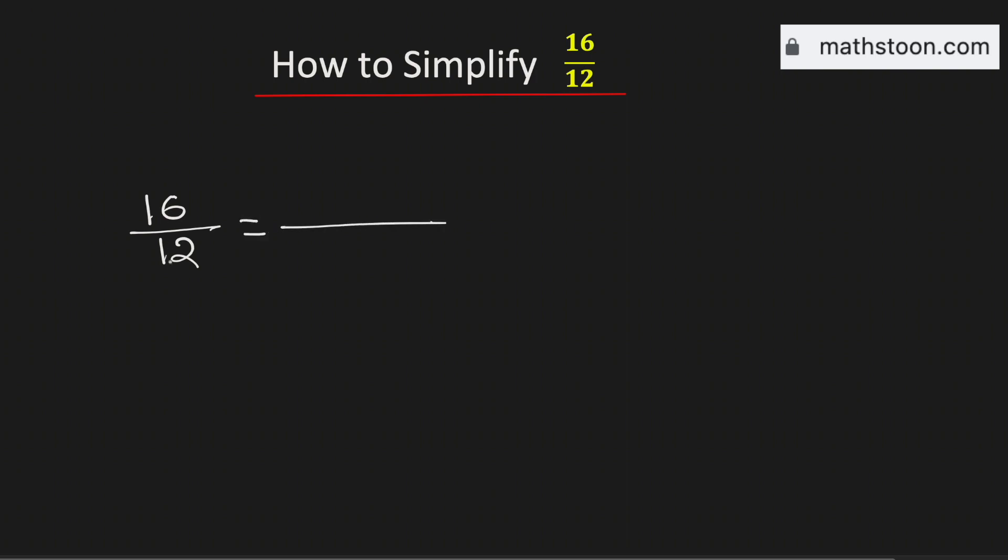Now look that both the numbers are even numbers, therefore they will be divisible by 2. To simplify this fraction we will divide them by 2 and if we do this we get 8 over 6.